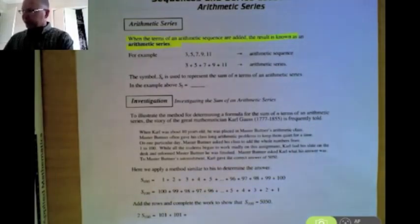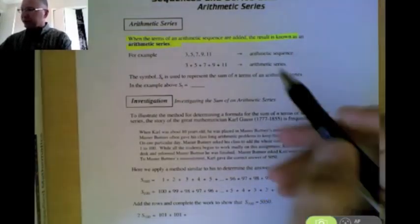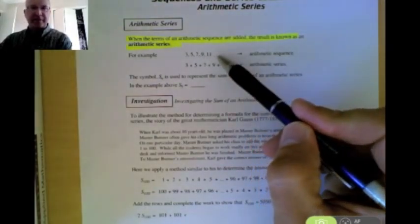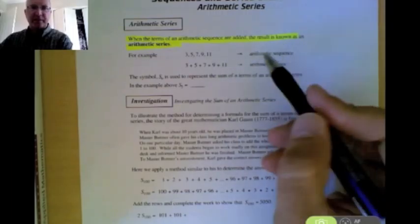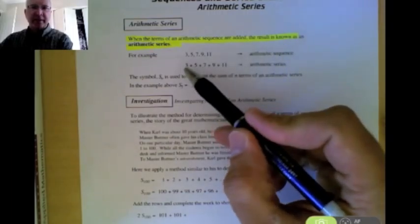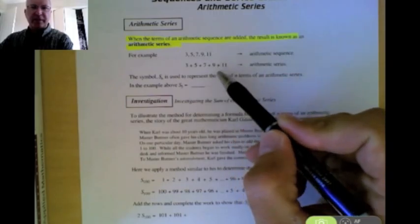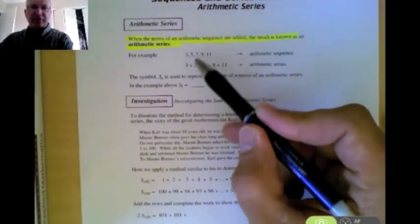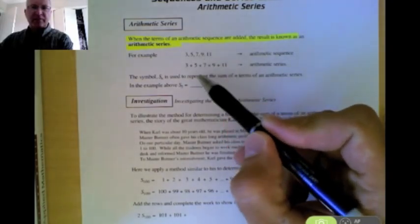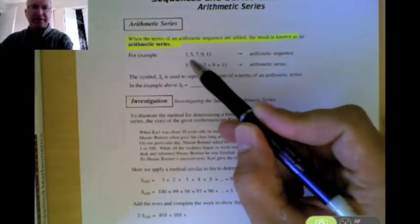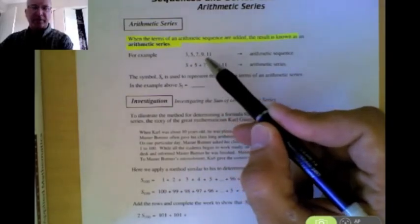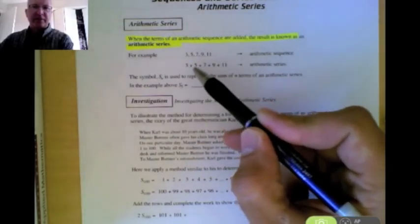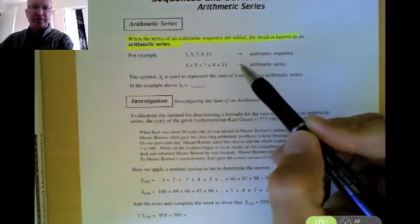For example, we've got a sequence here: three, five, seven, nine, eleven. That's an arithmetic sequence. How we make it into a series is we add these terms together and that means we're going to put a plus sign between the terms. So if you had two sets of numbers written together, you'd know you had a sequence if they had commas between them. And you know you have a series if you have a set of addition symbols between them.